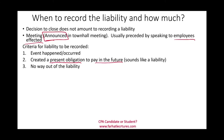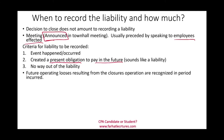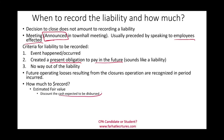Sometimes we might incur future operating losses from the closure of an operation. Those are recognized in the period incurred — we'll record them in future periods. As for how much to record, we determine the fair value of the liability. We look at the future cash flows expected to be disbursed and discount them — that's how we figure out the liability amount.